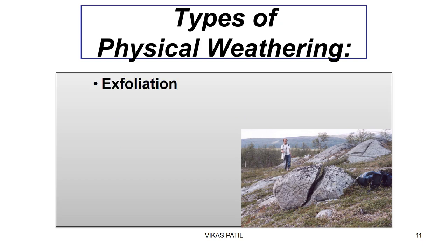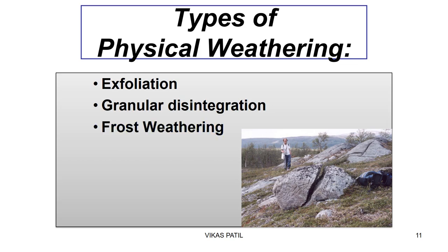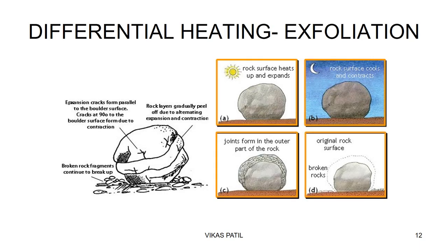Types of physical weathering: exfoliation, granular disintegration, and frost weathering. Exfoliation is common in places which are far away from the coastal areas, where the daily range of temperature is high. Desert is the most common place you can think of — hot deserts. This happens in the tropical region.